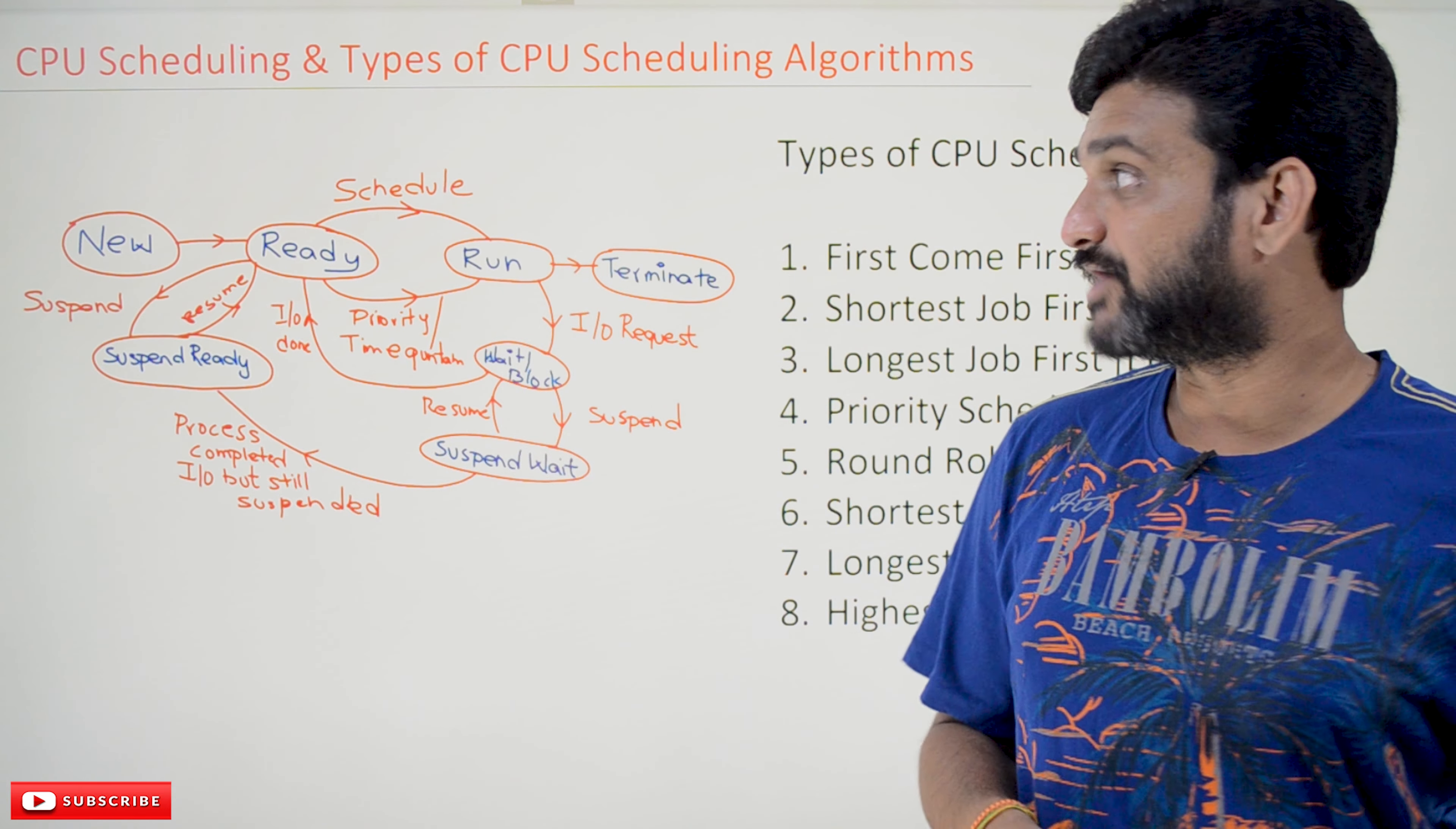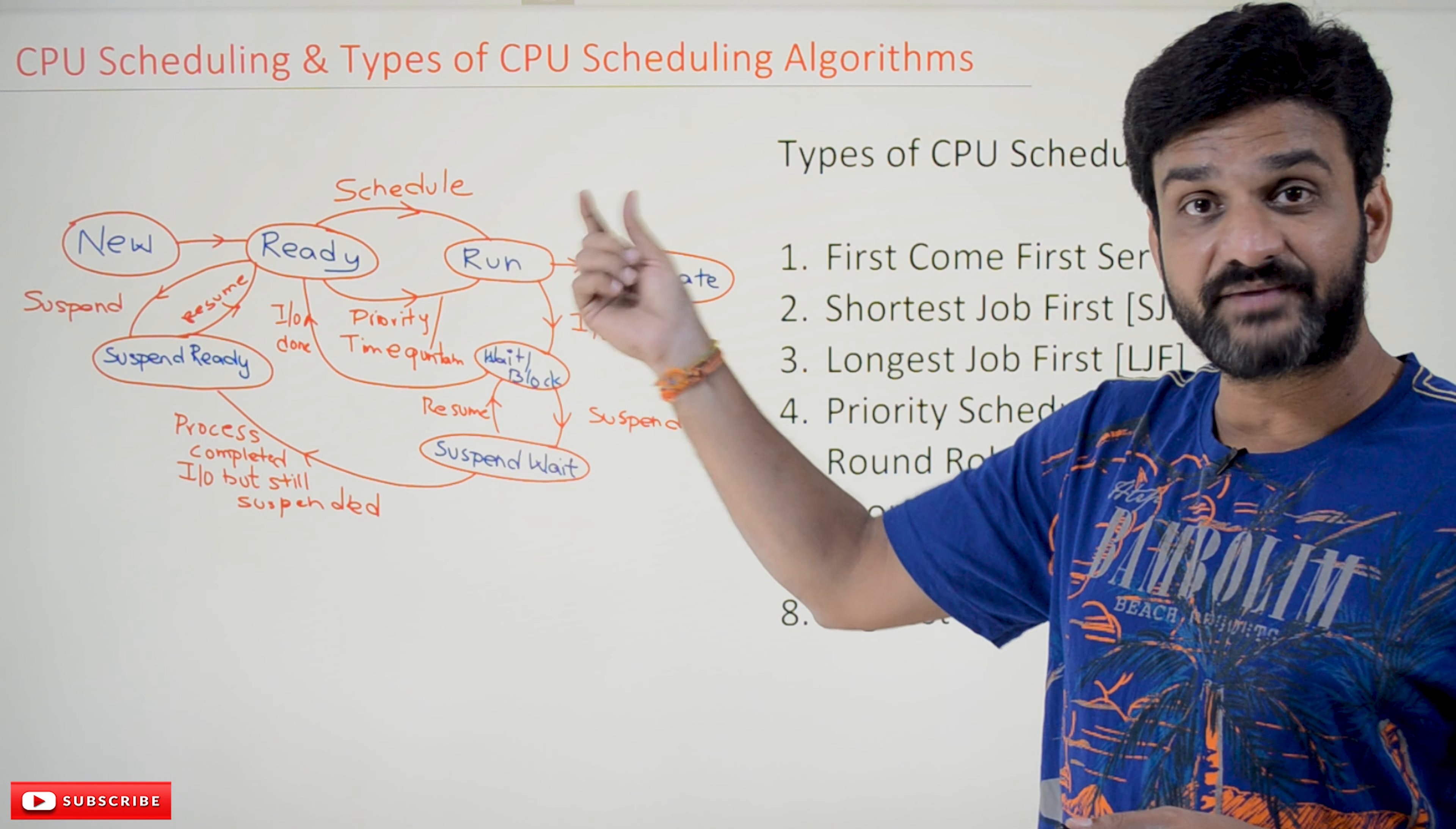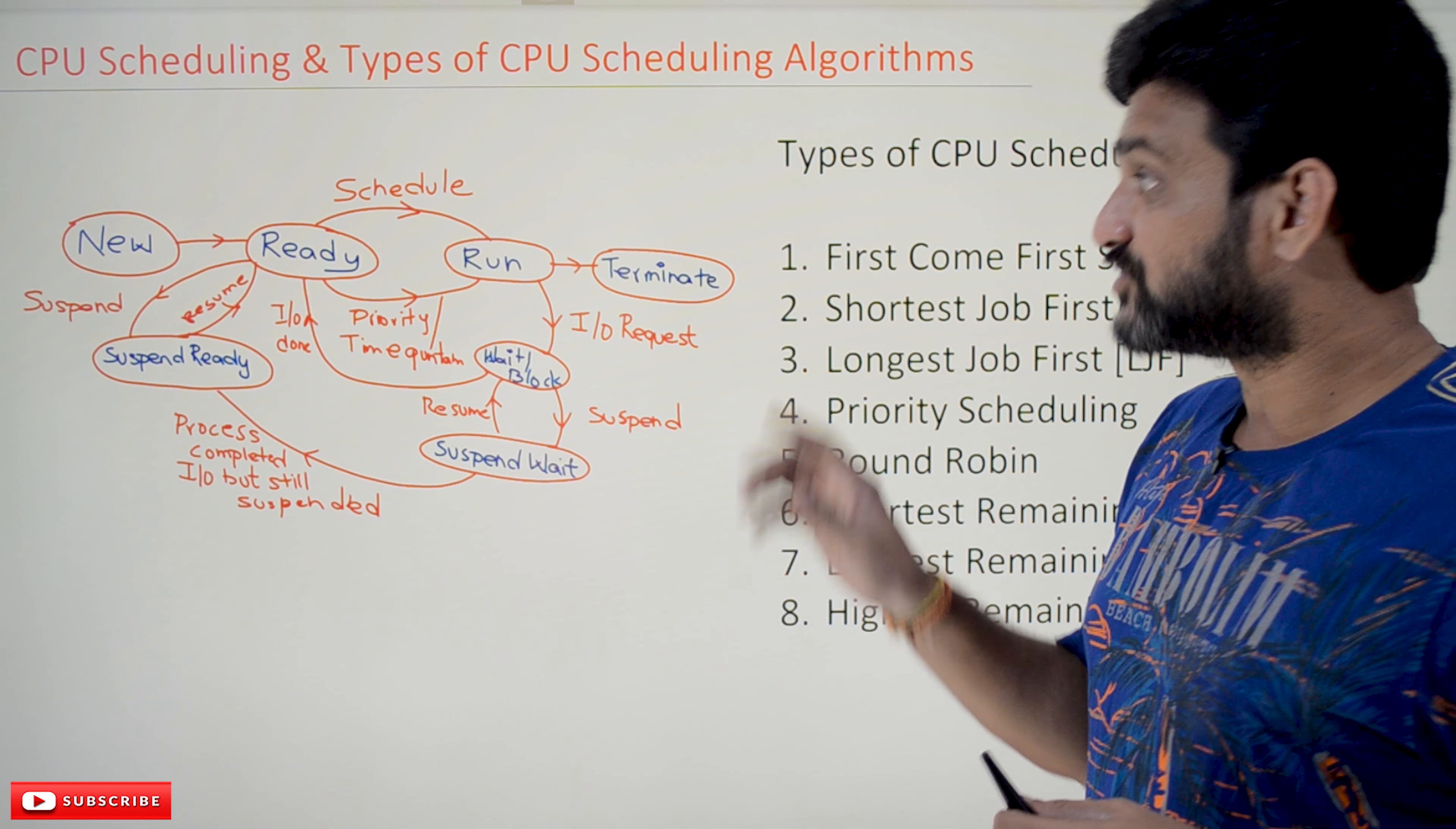Now, CPU scheduling - what is this CPU scheduling? This switching of process from ready state to running state is done by the short-term scheduler, which we have already discussed. That is what you call CPU scheduling. What is the need of CPU scheduling? We will try to understand.